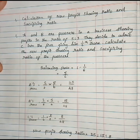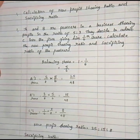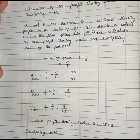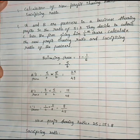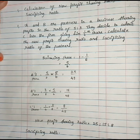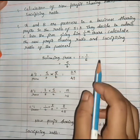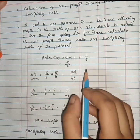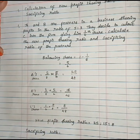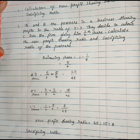First, the new profit sharing ratio is to be balanced. The new partner C's share is 1/6th. So the balancing share is 1 minus 1/6, which equals 5/6.